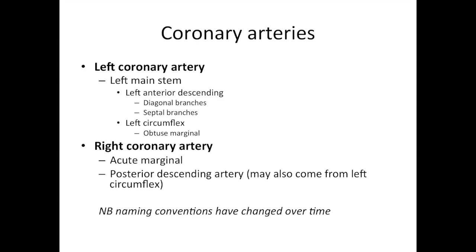Branches of the left anterior descending are called diagonals, and there are also septal branches. Branches of the circumflex artery are called obtuse marginals. The right coronary artery also has branches: an acute marginal, and along the bottom of the heart the posterior descending artery, which is normally supplied by the right but can also be supplied by the left side.